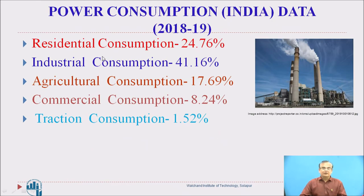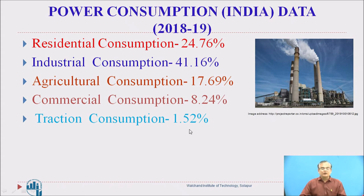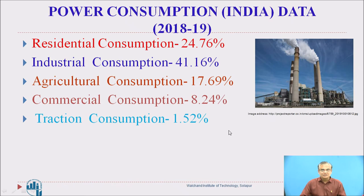The consumption of electricity in our country for different purposes in 2018-19 is as follows: residential consumption is 24.76%; industrial consumption is 41.16%, which is the largest share; agricultural consumption is 17.69%; commercial consumption is 8.24%; and traction consumption is 1.52%. Residential consumption is also significant at 24.76% because our population is high.